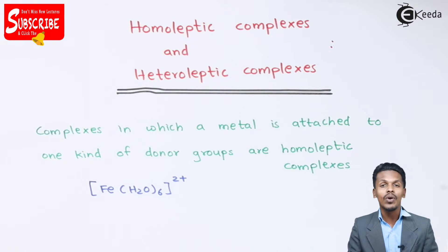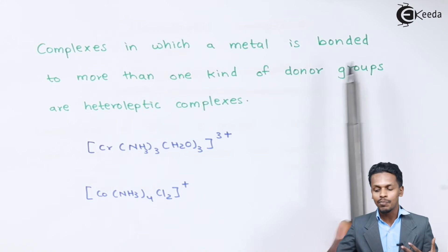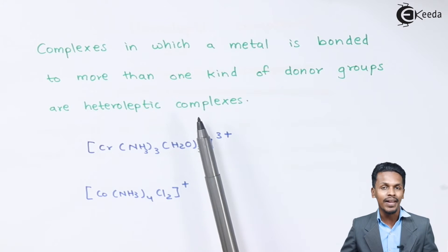Talking about the next one, complexes in which a metal is bonded to more than one kind of donor groups are heteroleptic complexes. So in this case we have two examples.